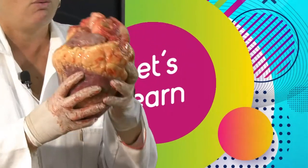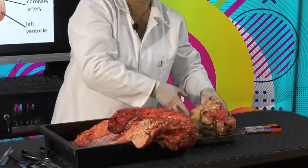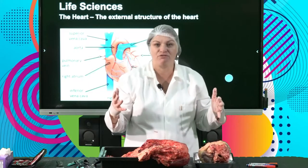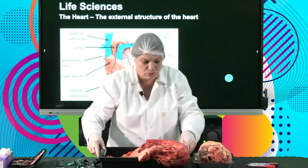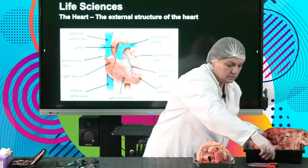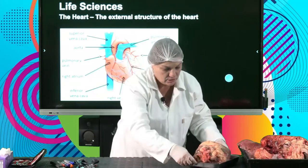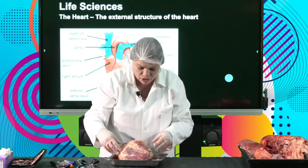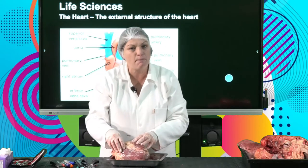The bigger the animal, the more blood we have to pump, the bigger the muscle is going to be. Now let's have a look at the heart. Let me just move these to the side. Now we're going to have a look at the external structure. When it comes to the heart, what you need to understand is it's a mirror image. It tilts slightly — at the top it's much wider, because those are going to be the top chambers, and the heart narrows down to an apex at the bottom.